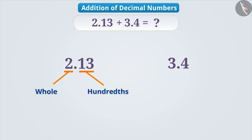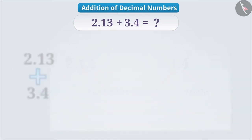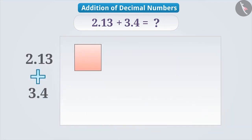in 3.4, 3 is whole and 4 is tenths. In order to learn the addition, let's take a square and consider it as a whole or a unit. Since there are two wholes in 2.13,